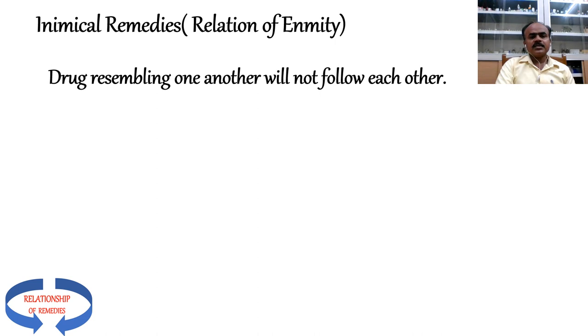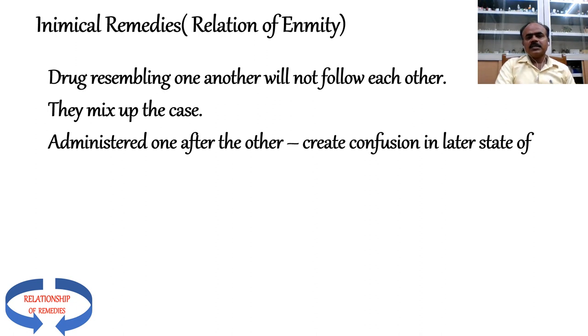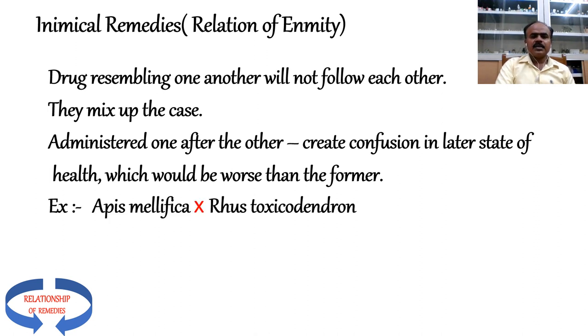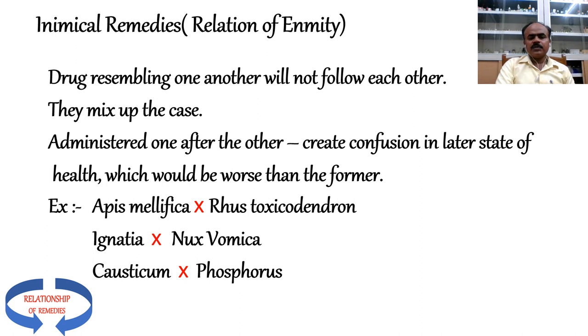Another crucial relationship is inimical remedies—the relation of enmity. Rather than knowing what should be used, we should know what should not be used. Drugs resembling one another will not follow each other; administered one after the other, they cause confusion in the later state of health, which would be worse than before. Examples: Apis is inimical to Rhus Toxicodendron; Ignatia is inimical to Nux Vomica; Causticum and Phosphorus are inimical to each other; Silicea is inimical to Mercury.